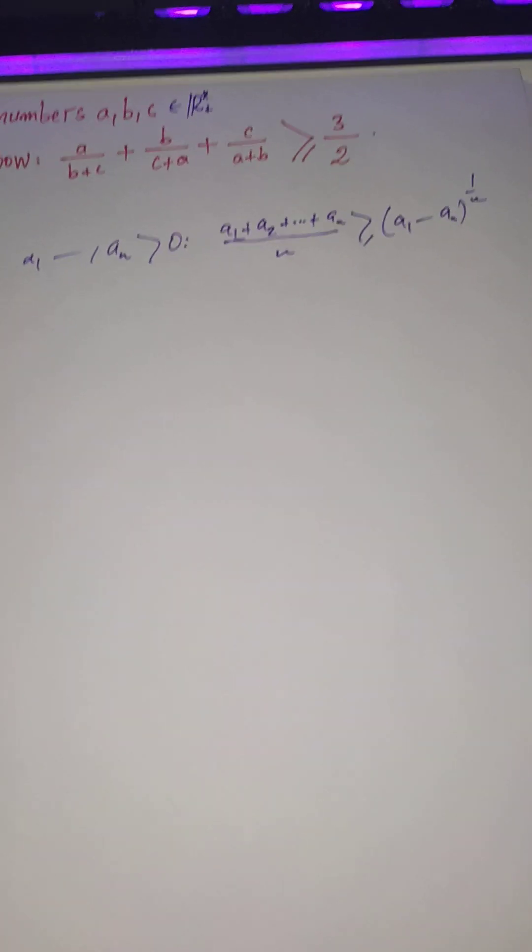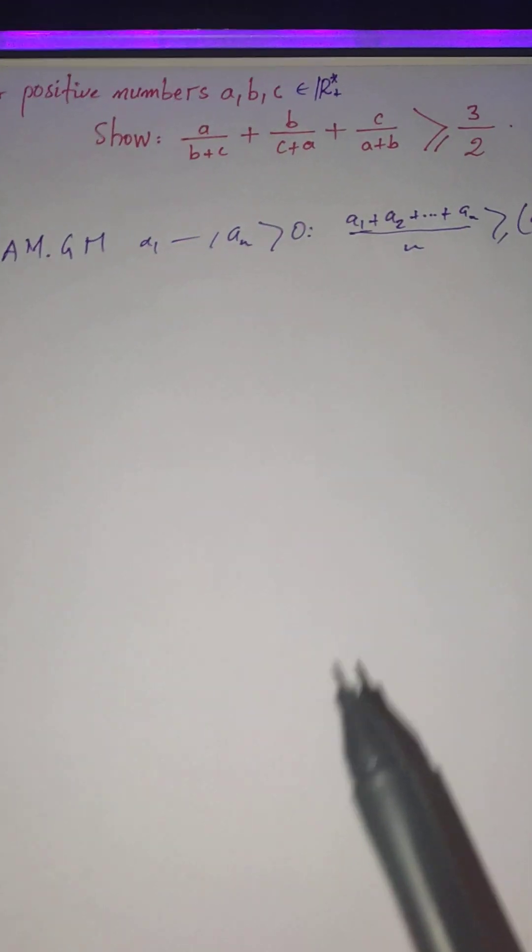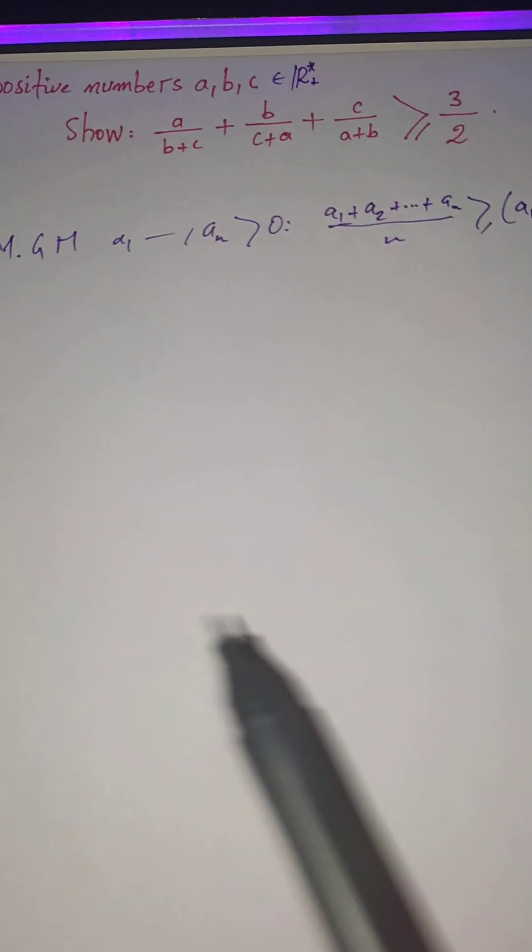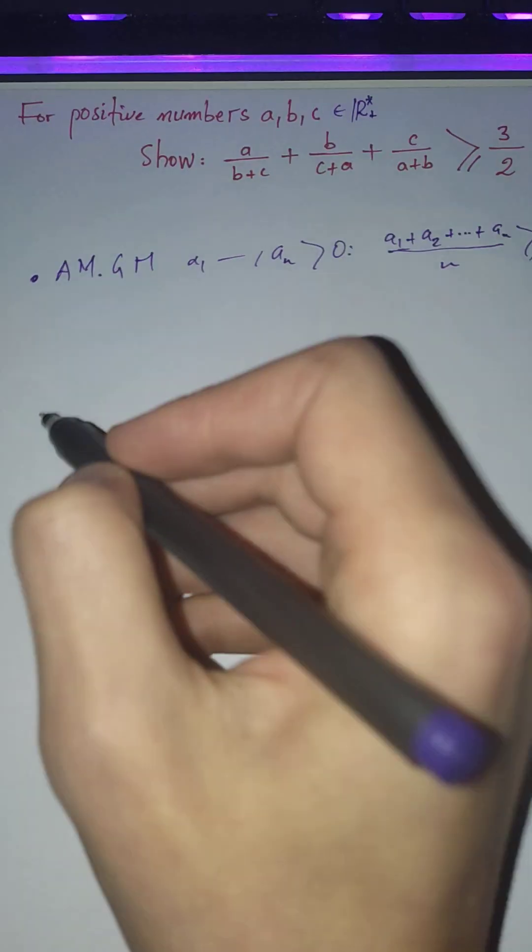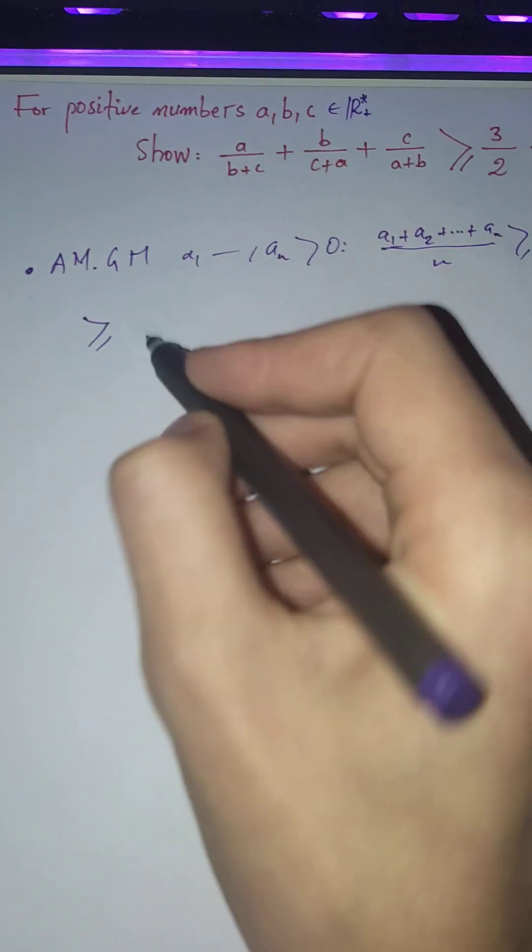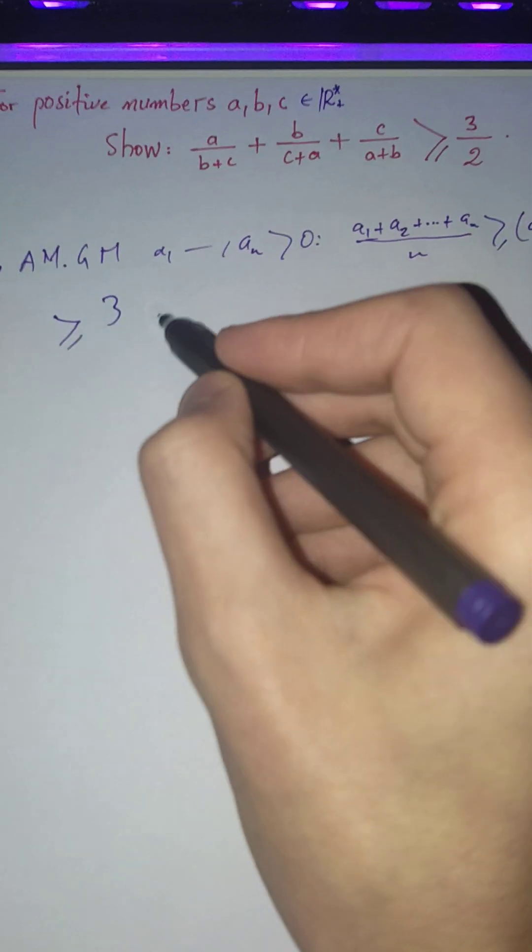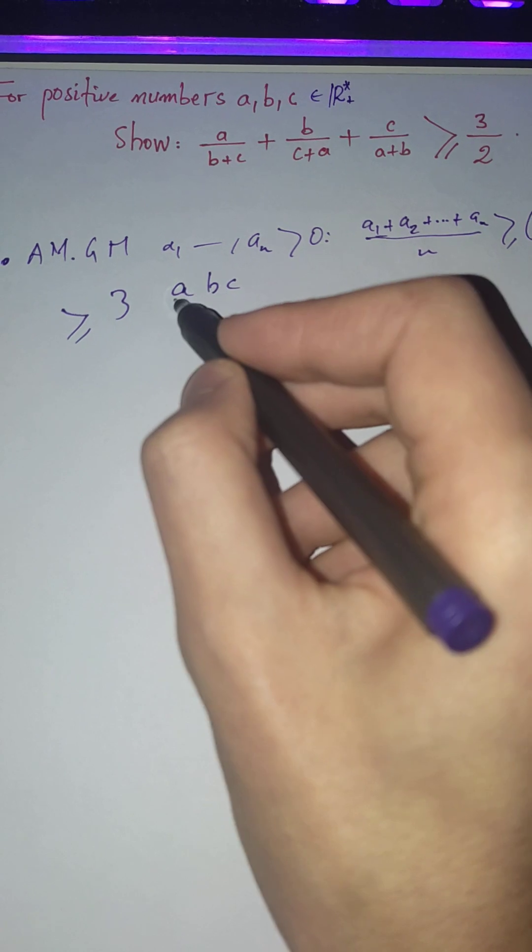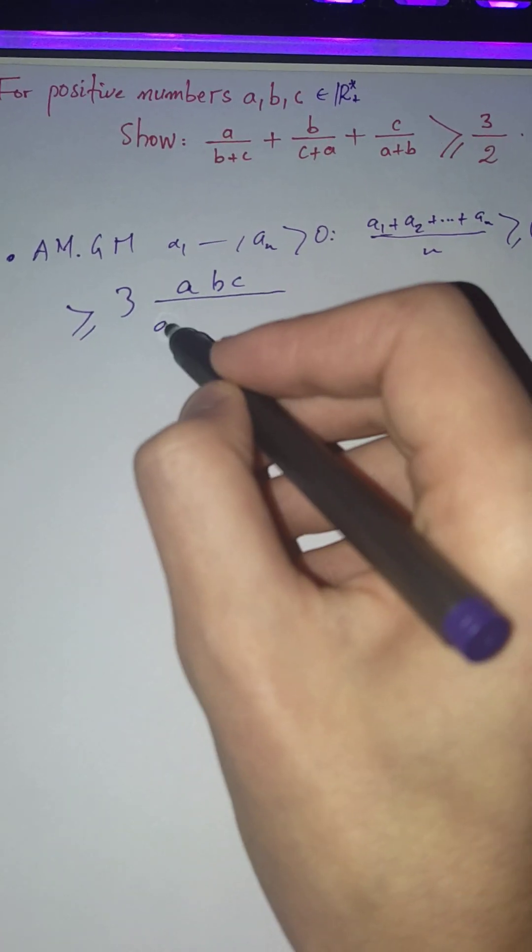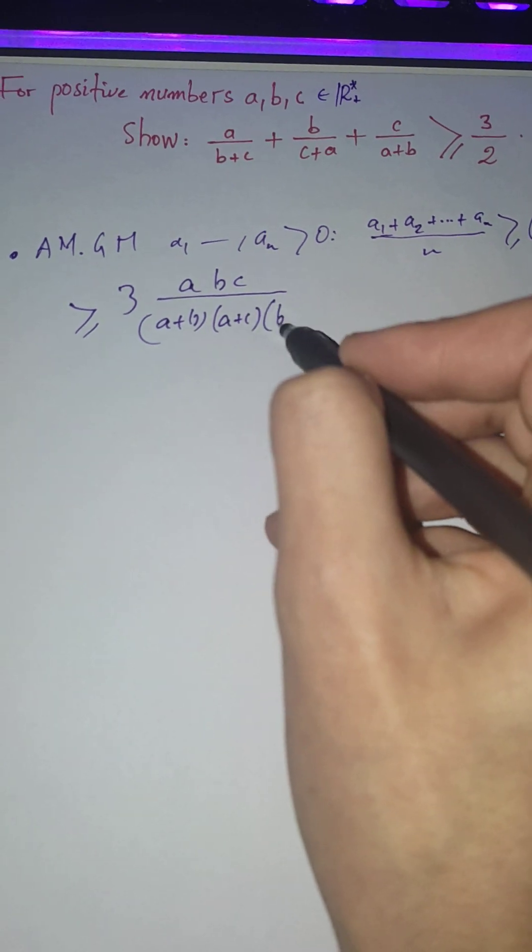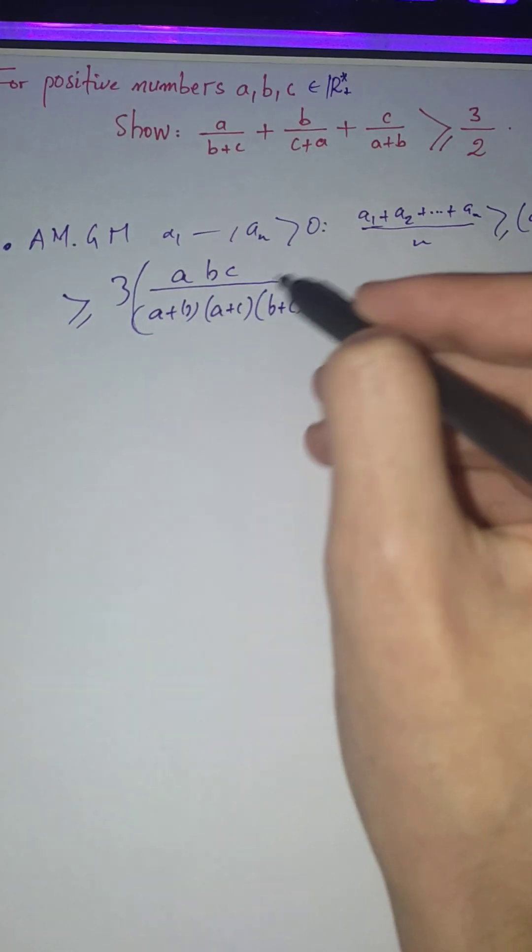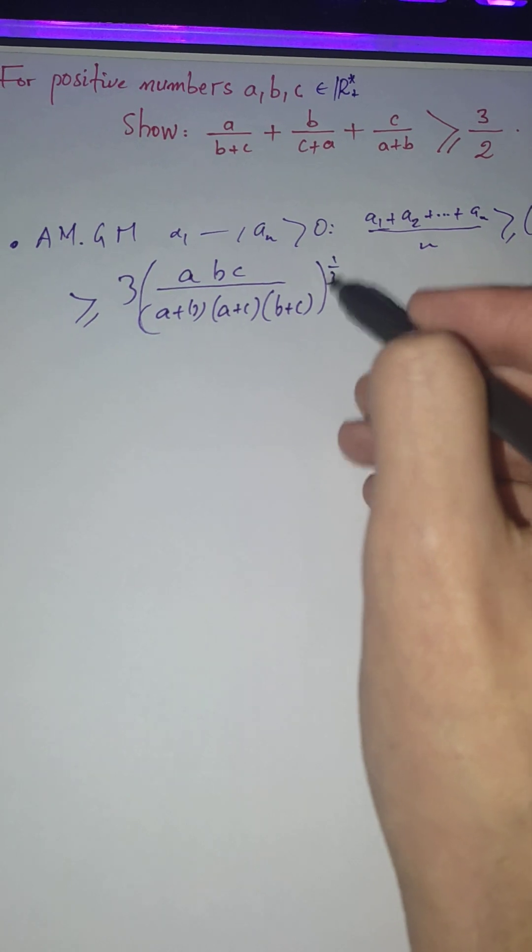The first thing I tried is to use the AM-GM inequality. If we do that, we have the sum and we can say immediately it's bigger than 3 times the cube root of the product abc over (a plus b)(a plus c)(b plus c).